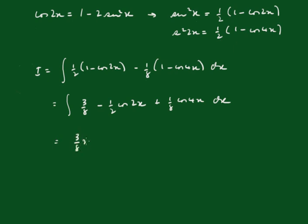Three eighths of x, and this would be cos goes to positive sine, so it'll be one quarter sine 2x, and this would be one thirty-second sine 4x plus a constant.